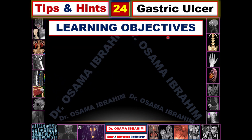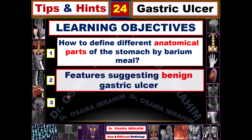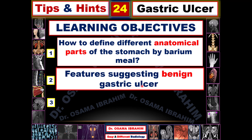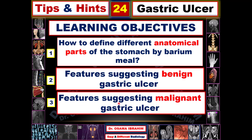The learning objectives from my presentation today are: how to define different anatomical parts of the stomach by barium meal, then I will talk about the features suggestive of benign gastric ulcers and the features suggestive of malignant gastric ulcers through the different barium imaging of these two types.